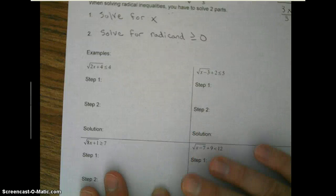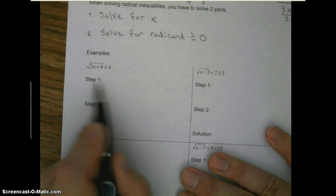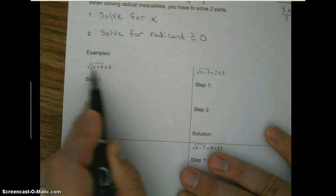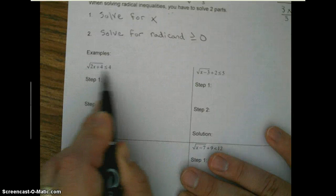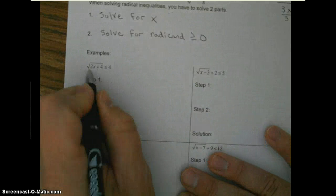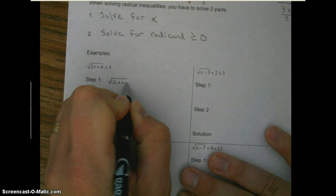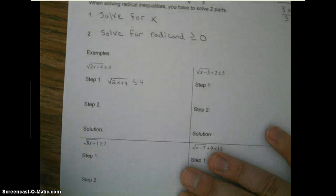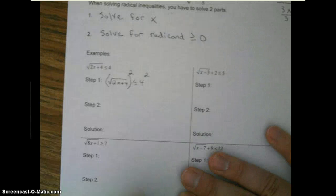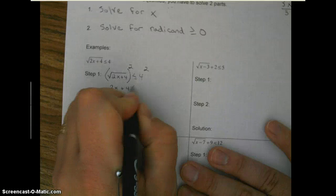So looking at example number one, step one — we want to solve this for x. To get rid of a radical, to get rid of a square root, we square it. So we're going to square the left, square the right. We get 2x plus 4 is less than or equal to 16.